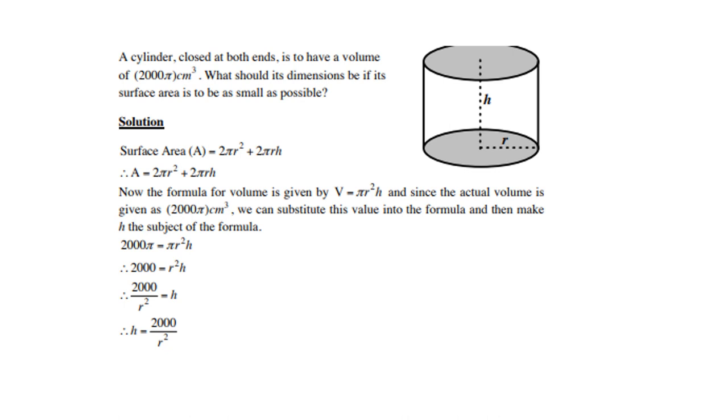200π equals πr²h. Divide both sides by π. Remember, you can't divide by a variable, but you can divide by a constant. Then make h the subject, and you get h = 2000/r².